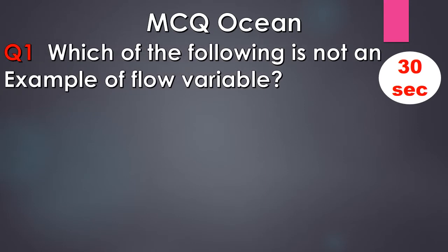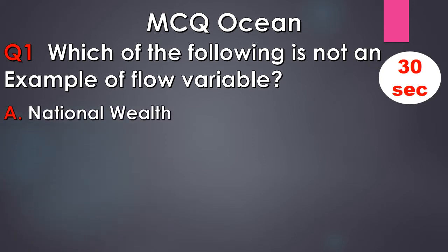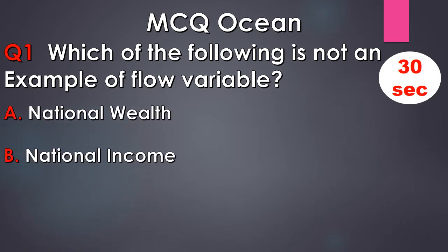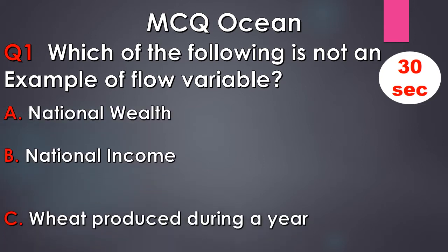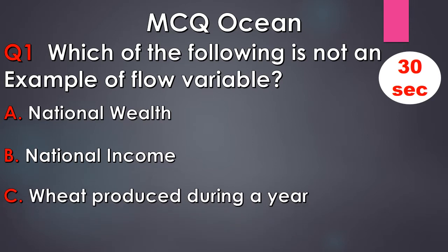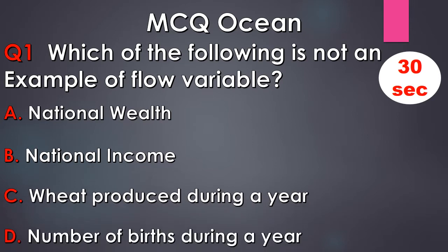Question number 1. Which of the following is not an example of a flow variable? A. National Wealth, B. National Income, C. Wheat produced during a year, D. Number of births during a year. Your time starts now.